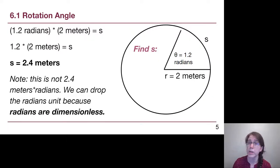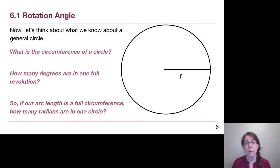Radians are kind of weird, but we'll get used to them. Let's think about what we might already know about a circle. If we think about the full circumference of a circle, the circumference of a circle is 2 pi times the radius, 2 pi r.